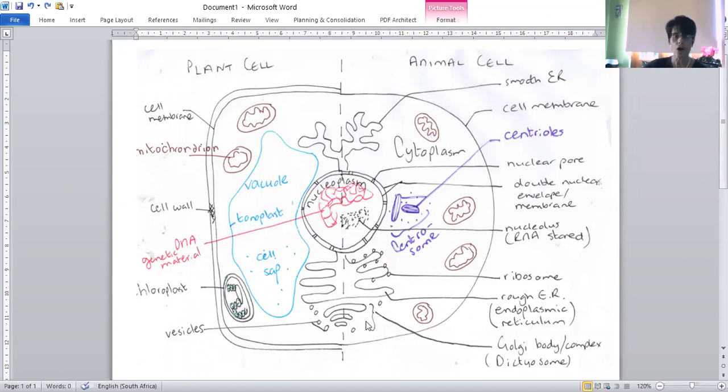If we look here, there's the cell membrane of the animal cell—that's the edge of the cytoplasm. The plant cell has the cell membrane as well, but the plant cell also has a cell wall made of cellulose, so it's a thicker layer around the cell.